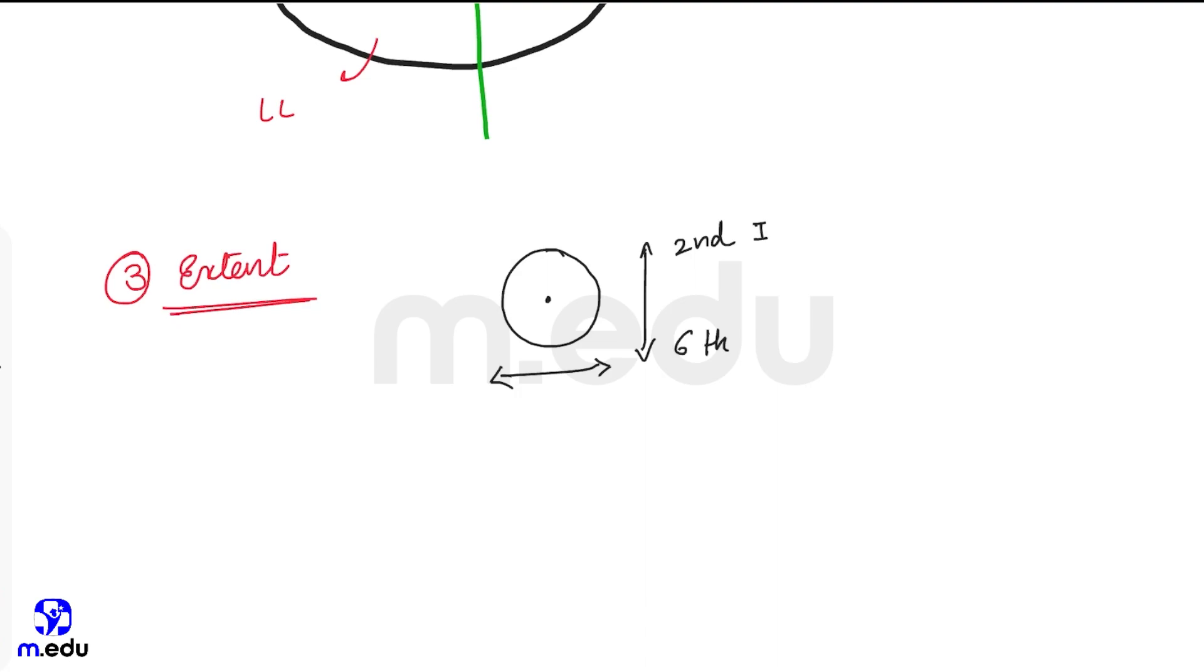Vertically, the mammary gland extends from second rib to sixth rib, and horizontally it lies between lateral border of sternum and mid-axillary line.